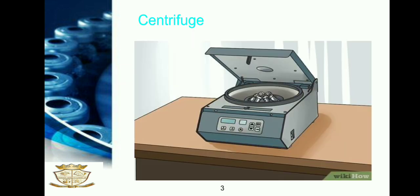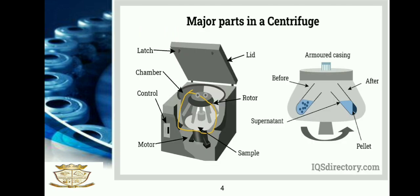Here is the figure of a centrifuge. These are the major parts in a centrifuge: chamber, motor, sample, rotor, lid, etc. The figure also shows how the sample appears before and after centrifugation. After centrifugation, the solution is divided into separate layers such as supernatant and pellet.